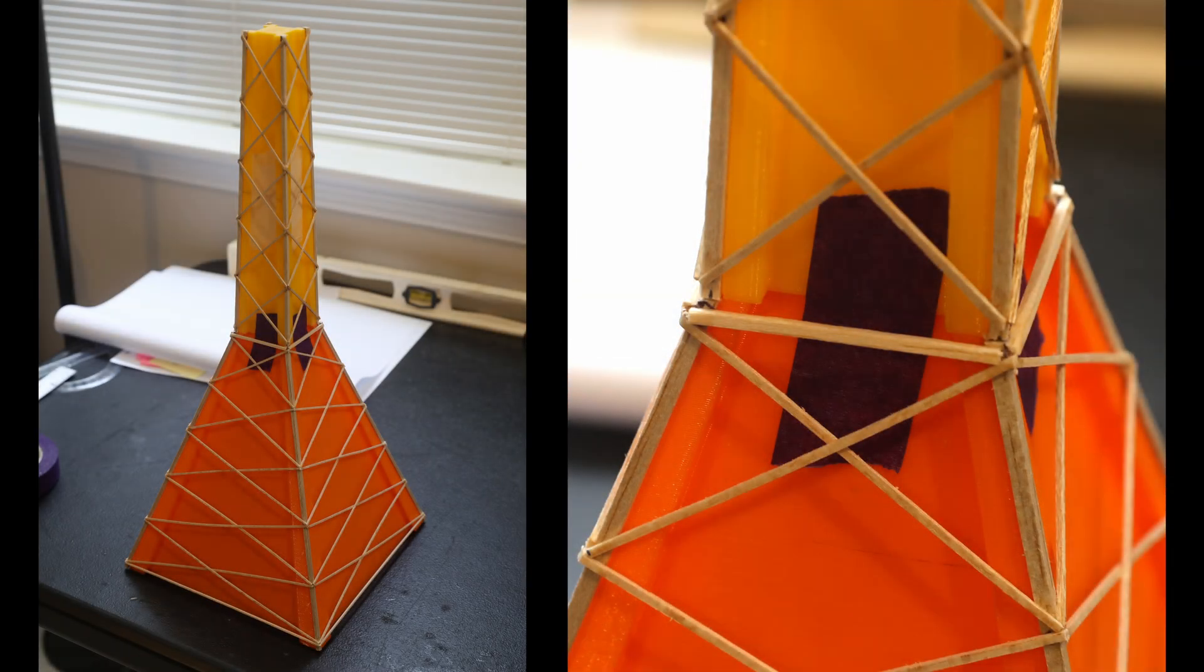Once that is done, you can put the base in place and then carefully slide the column down the jig and use it to perfectly align the legs.